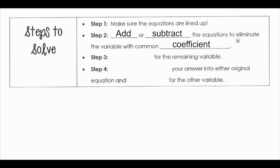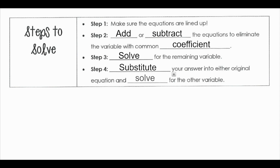Then we solve for that remaining variable. Once we have that variable, we substitute our answer back into one of the original equations and then solve for the other variable.